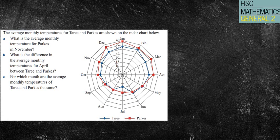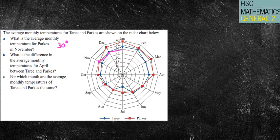Next question: the average monthly temperatures for Tyree and Parks are shown on the radar below. What is the average monthly temperature for Parks in November? Parks is the red rectangle, so looking at November I follow the black line across — that's 30 degrees. What is the difference in average monthly temperatures for April between Tyree and Parks? Going to April: Parks traces back to 35, and Tyree traces back to 30 — therefore the difference is five degrees.